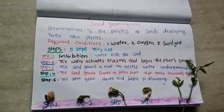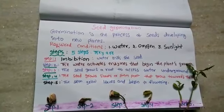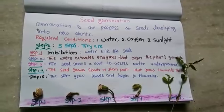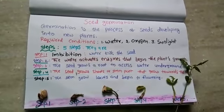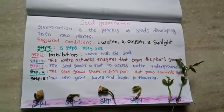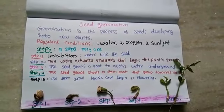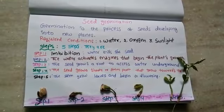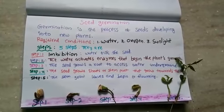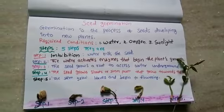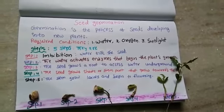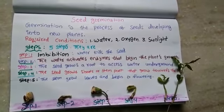In fifth standard, we learn about seed germination. What are the things needed for germination? Think about the required conditions for plants. Water, oxygen or air, and the third one is sunlight or temperature. These three conditions are very important to grow plants.